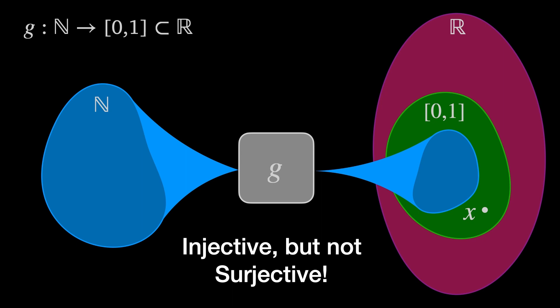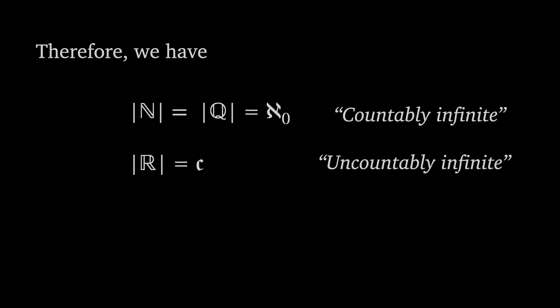So g is injective, but it can't be surjective. Therefore, we have the cardinality of the natural numbers is the same as the rationals. We call this aleph-null or countably infinite. The cardinality of the real numbers is denoted c for continuum and we call this uncountably infinite. What we've shown with Cantor's diagonalization is that aleph-null is strictly less than c.